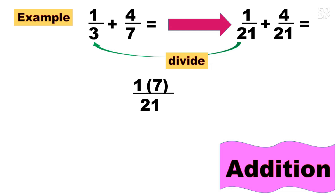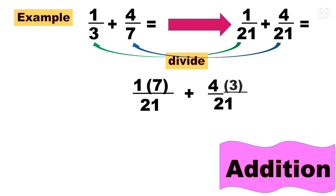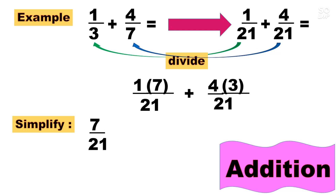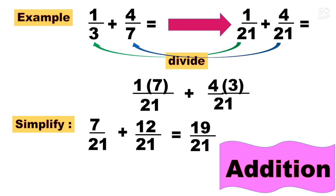So we have 1 times 7, plus — rewrite 4, over 21 — then divide 21 divided by 7, which is 3. That 3 is what we multiply by the numerator 4. Now simplify: 1 times 7 is 7, so we have 7 over 21. Plus 4 times 3 is 12 over 21. Since they now have the same denominator, we add the numerators: 7 plus 12 equals 19. Copy the common denominator 21. Therefore the answer is 19 over 21.